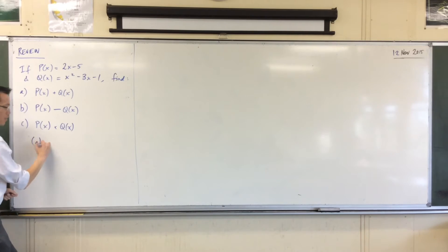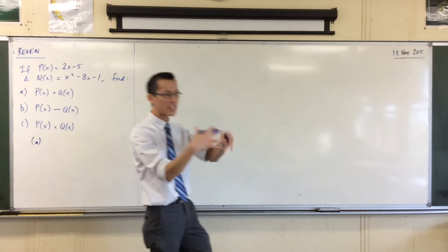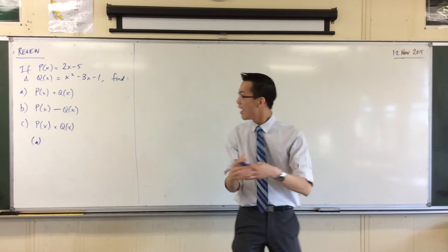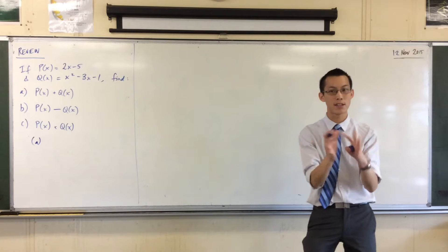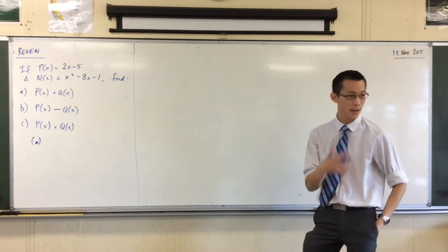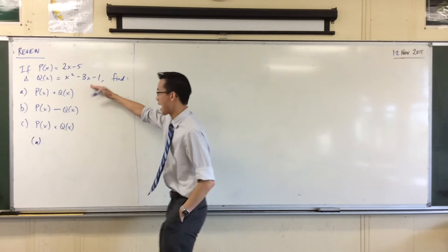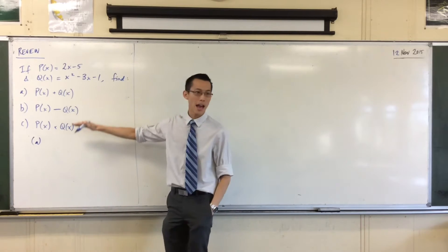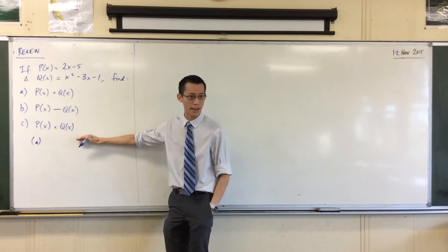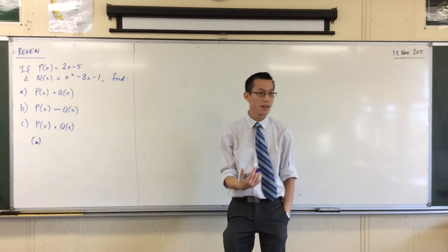We've got a pair of polynomials, and we're thinking about how they interact together. Here are the first three simple ways that we looked at last time. We can add, subtract, and we can multiply.